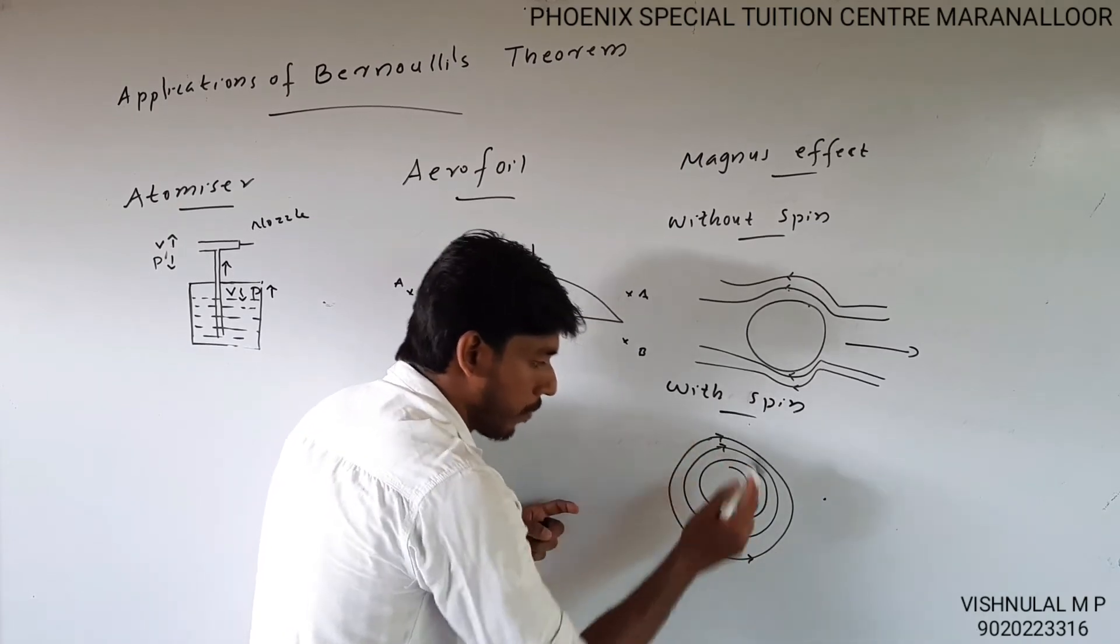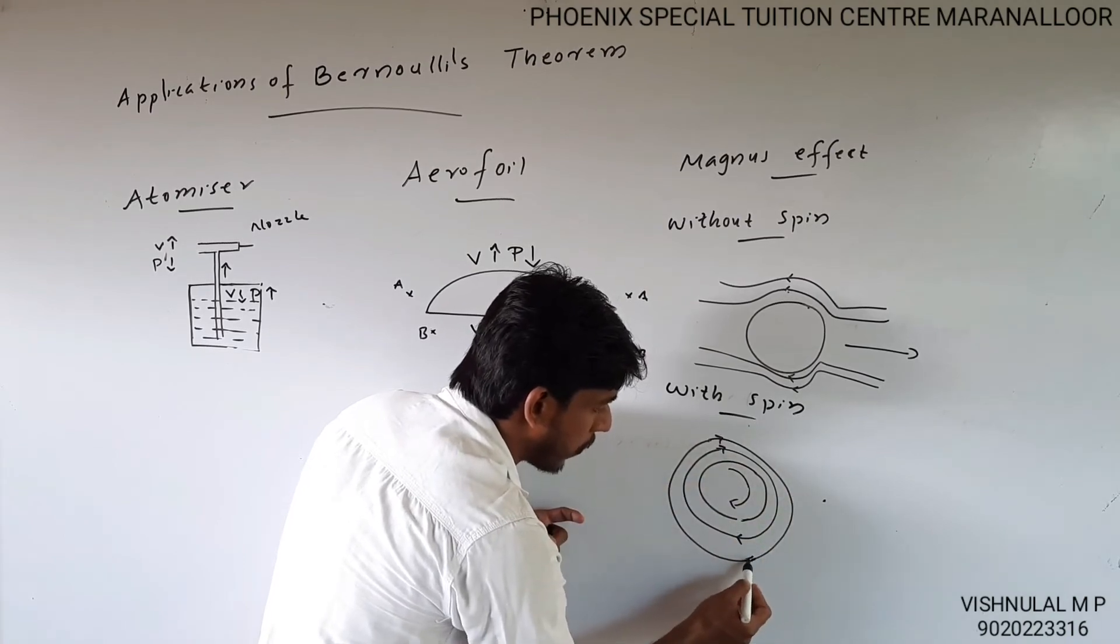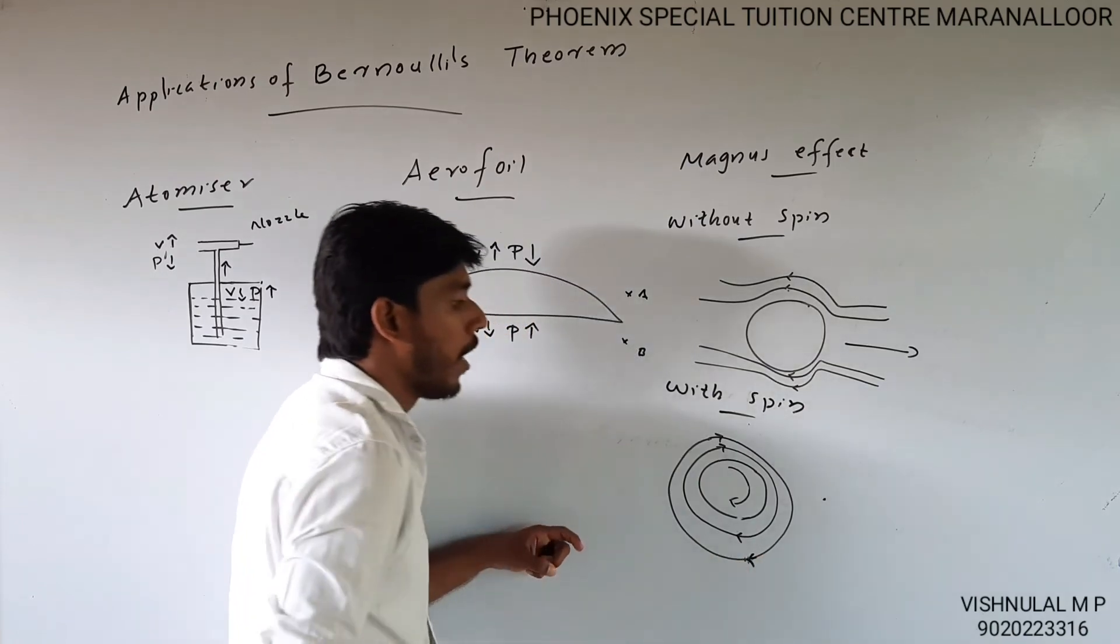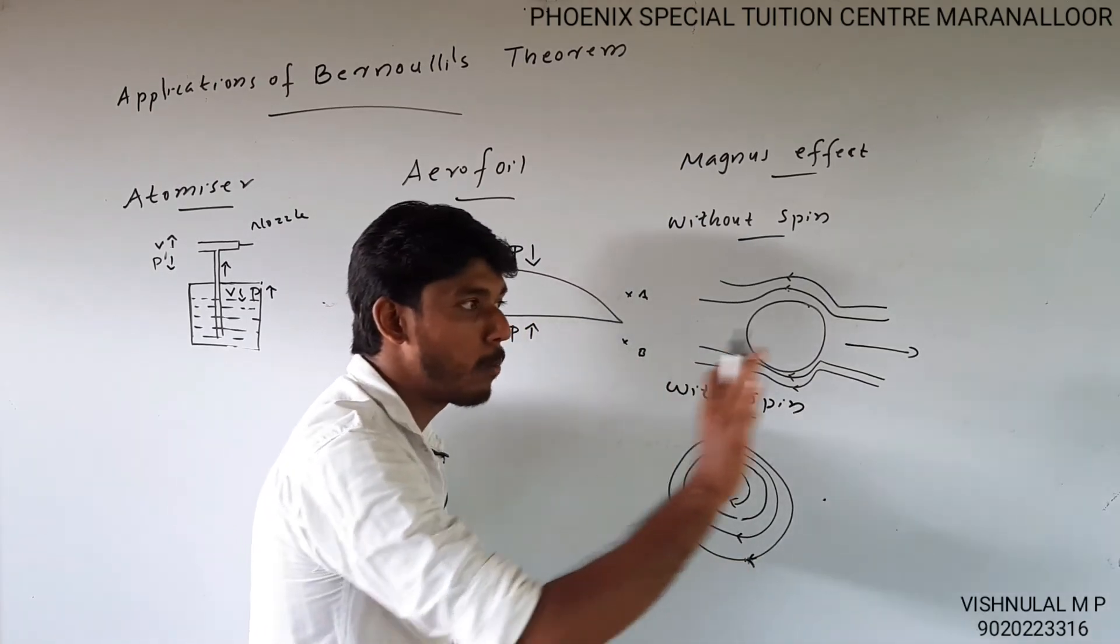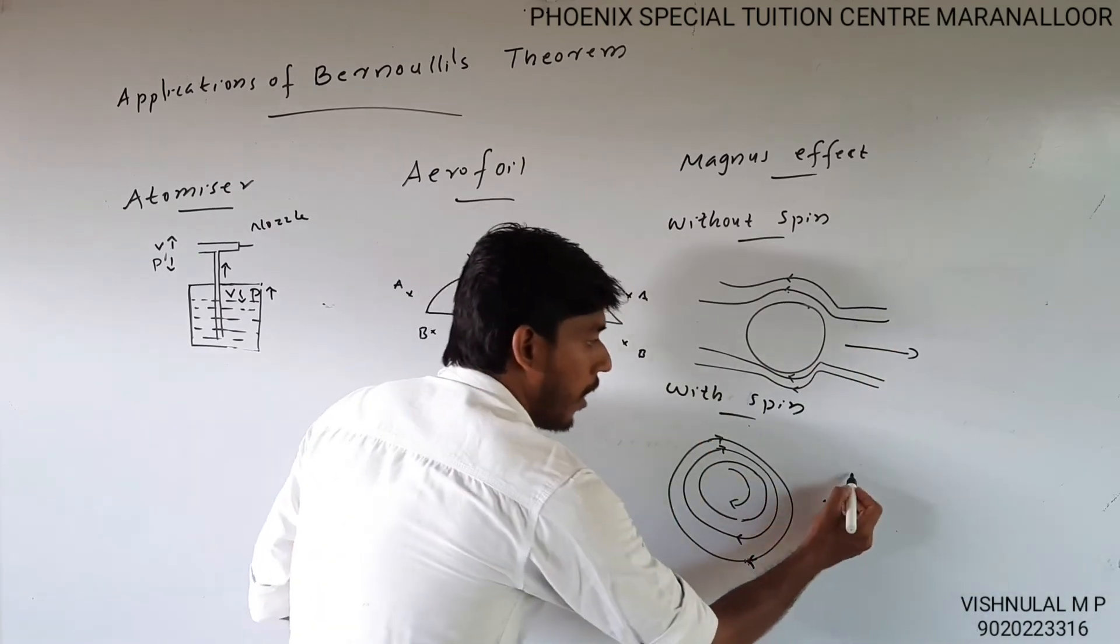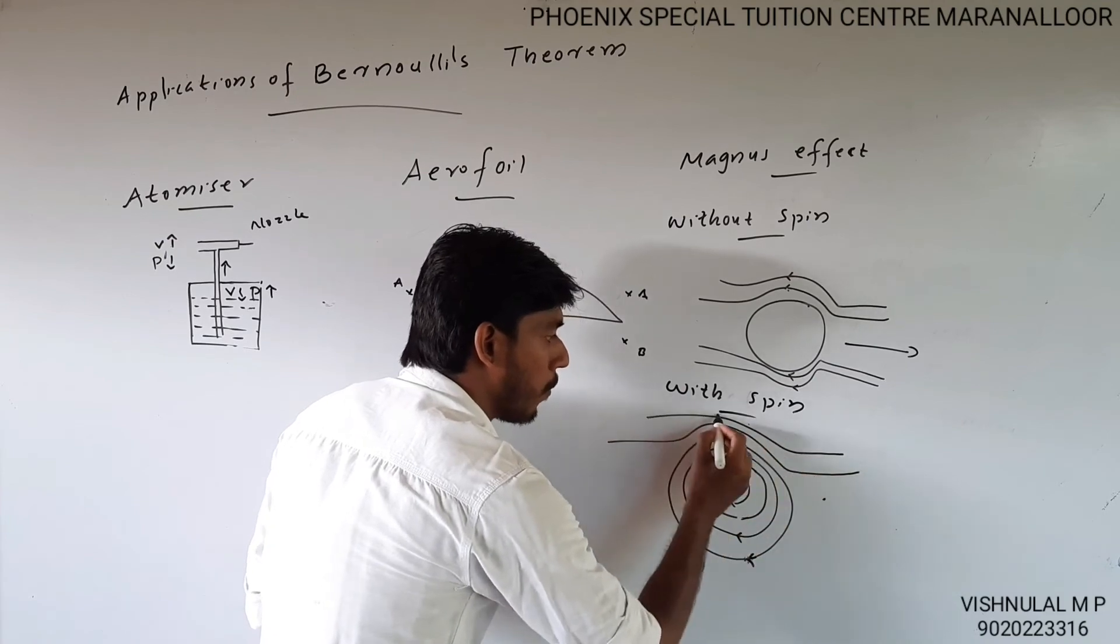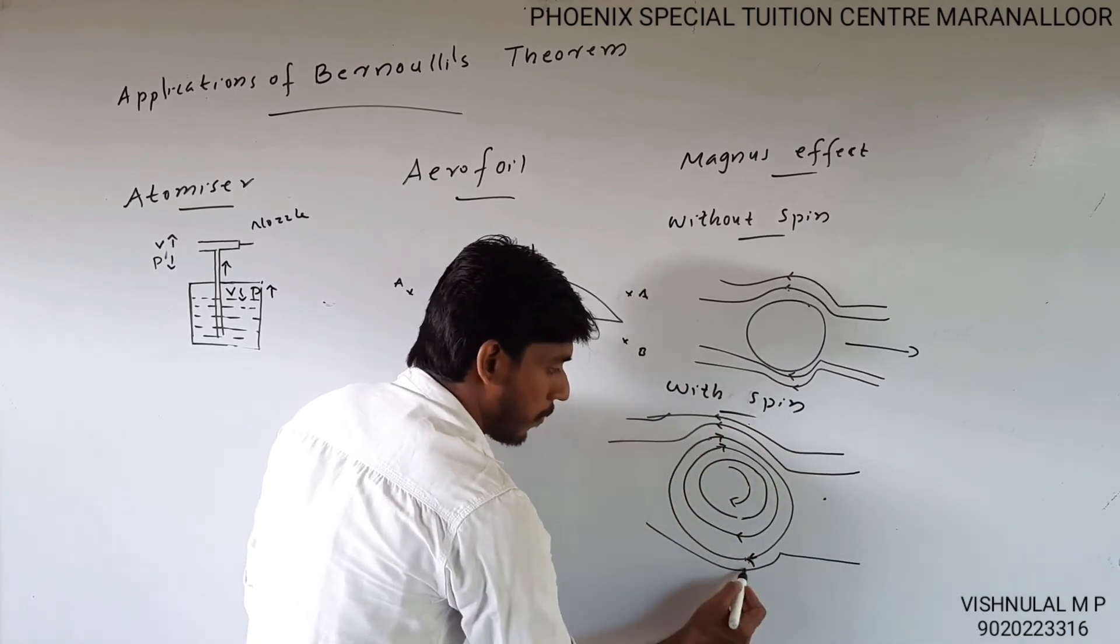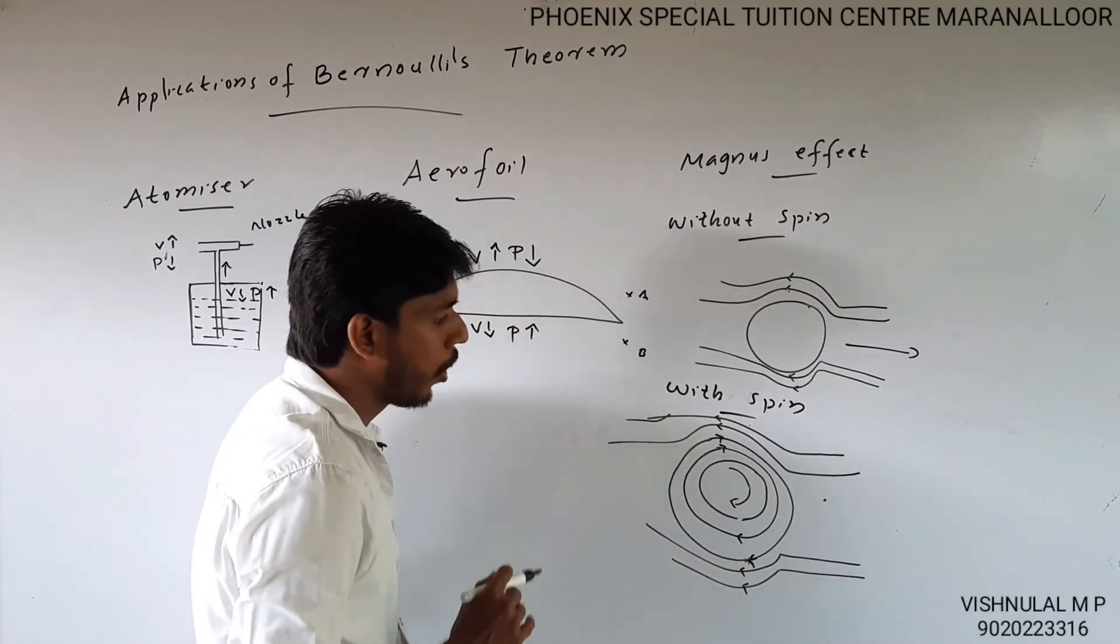This is clockwise direction. When you rotate, air on one side moves faster. On one side, rotation and forward motion add up. On the other side, they oppose.